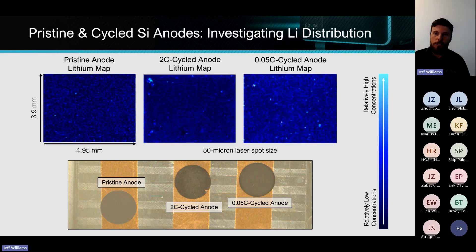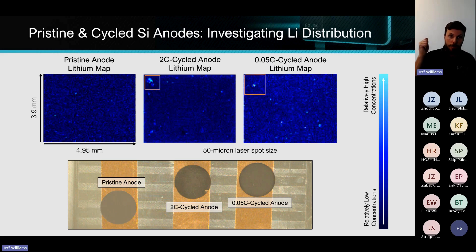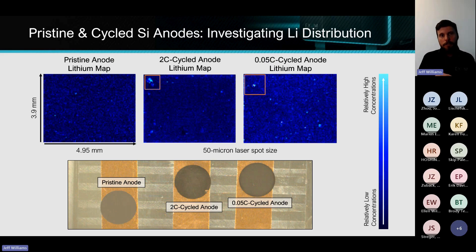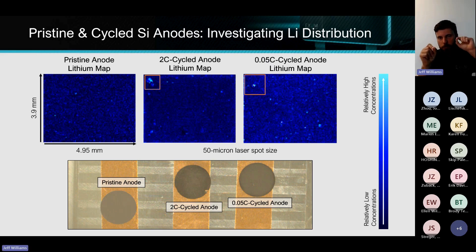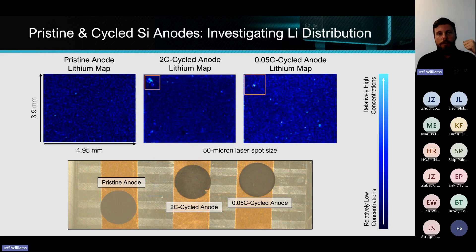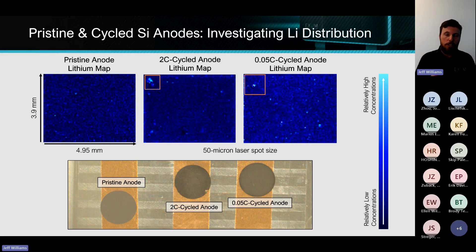Looking at the 2C and 0.05C samples, we see hotspots. On the 2C — the very fast-cycled one — we found much larger nucleation sites for lithium plating, and we also found lithium carbides and lithium hydrates from electrolyte decomposition. In the 0.05C, you see small little pinpricks, just the beginning of lithium plating. In the very fast charge, we found much larger nucleation sites — an accelerated process, which is in line with what the research expected.